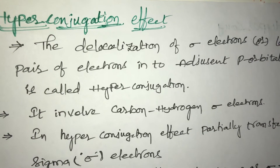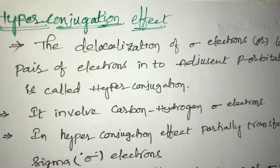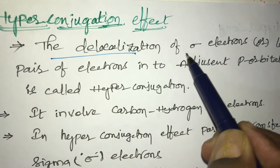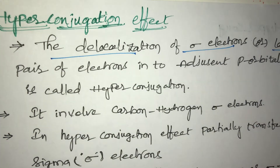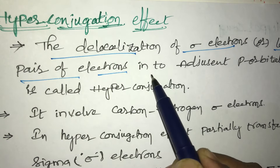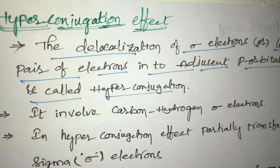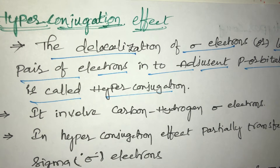Hi students, now a very important topic: hyperconjugation effect. What is hyperconjugation? The delocalization of sigma electrons or lone pair of electrons into an adjacent p orbital is called hyperconjugation.